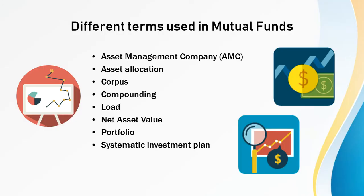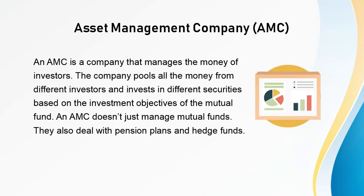Here are the terms we'll be looking at: asset management company (AMC), asset allocation, corpus, compounding, load, net asset value, portfolio, and systematic investment plan. Let's look at asset management company, also known as AMC. An AMC is